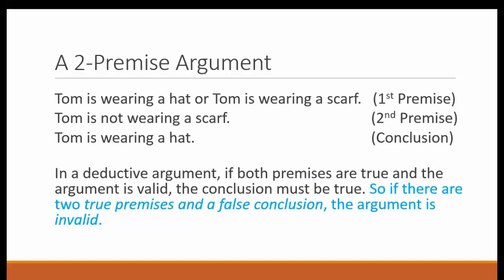Remember that the main characteristic of all deductive arguments is that if the premises are true and the logic is valid, the conclusion must be true. So this also means that if we have two true premises and a false conclusion, we know the argument must be invalid. This gives us a convenient way to test for the validity of an argument. If the premises are true and the conclusion is false, we know we've made a mistake in reasoning.